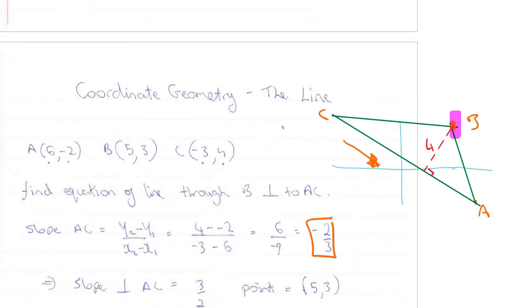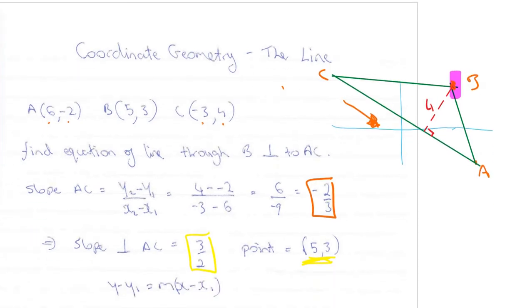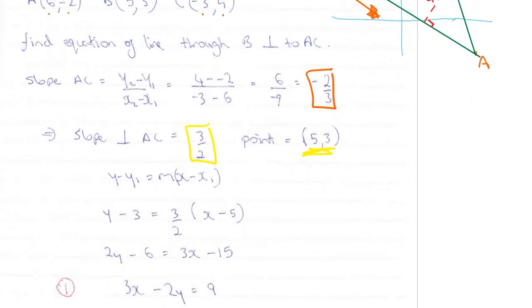So the negative reciprocal of the slope of AC is going to be 3 over 2. As we change the sign and flip the fraction that gives me 3 over 2 here for my slope of L1. I need a point to get the equation of the line which is the point B which is 5, 3. So I just simply plug it into the equation of the line and I now have my equation of the line perpendicular to AC.